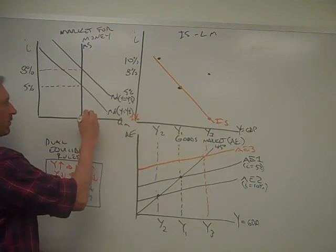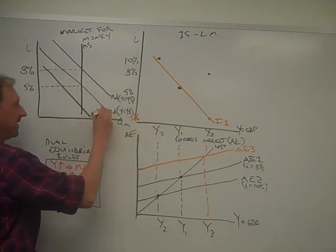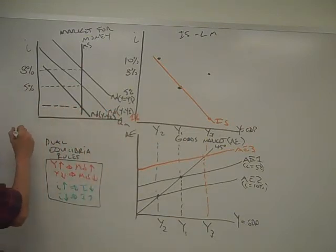Well, then we would arrive at a money demand curve here, MD. If Y equals Y2, that's really low, and interest rates would be low. I'll call this 1% just to line up with the other one.